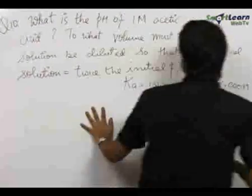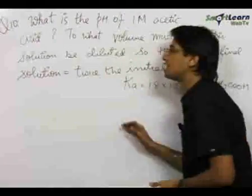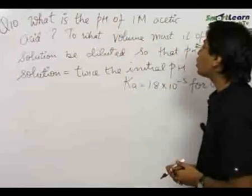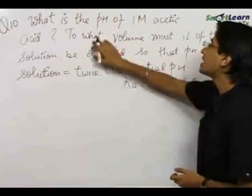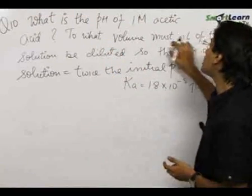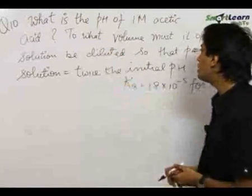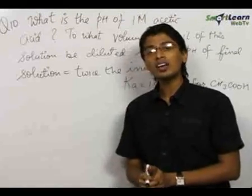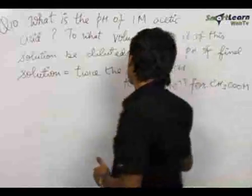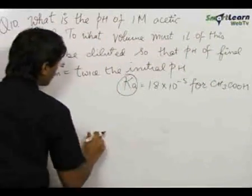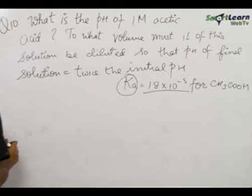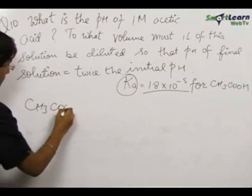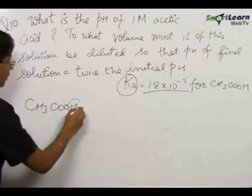This is problem ten for ionic equilibrium. We need to find the pH of 1 molar acetic acid, and in the second part, find to what volume 1 liter of this solution must be diluted so that the pH of the resultant solution equals twice the initial pH. We are given the dissociation constant Ka = 1.8×10⁻⁵. CH₃CO₂H has one ionizable H.